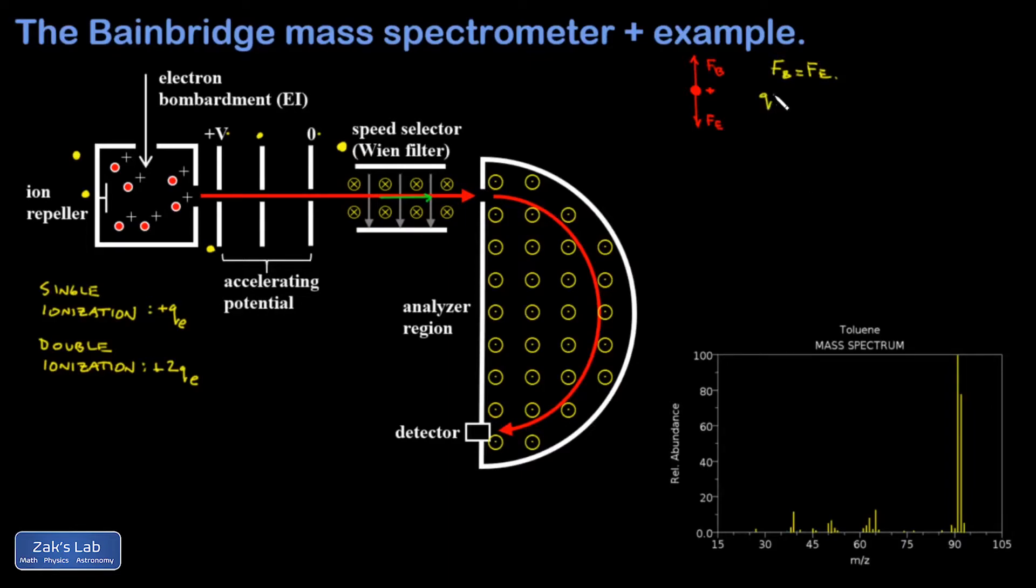I plug in the magnitude of the magnetic force, that's QVB, because the motion is perpendicular to the magnetic field. And then the electric force, that's QE. So it doesn't matter what Q is. I find that the special speed that's undeflected by these fields is E over B.